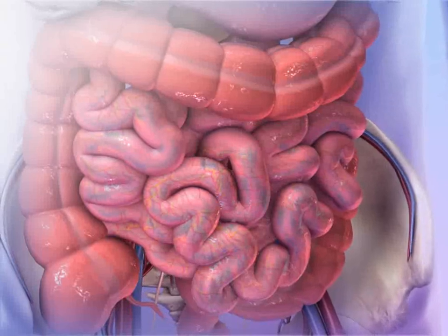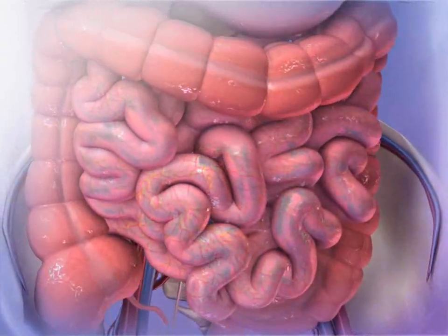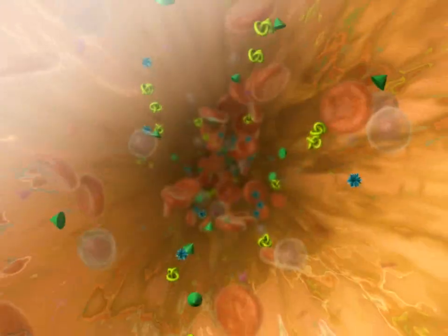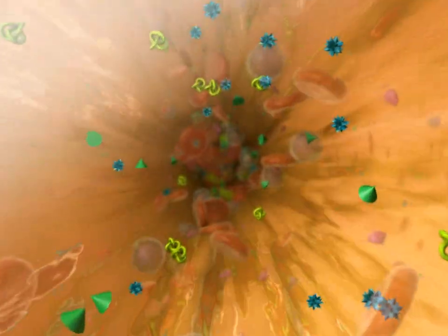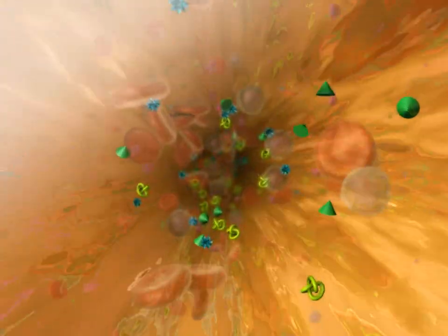Nutrients that pass from the digestive system into the body are transported in the blood plasma. These nutrients include glucose, amino acids, vitamins, minerals, and fatty acids.